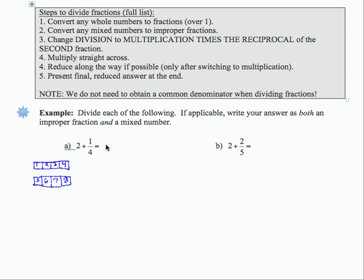So the result of 2 divided by 1 fourth should be 8. Well, let's see how that would work with our mathematical steps. So if I have 2 divided by 1 fourth, 2 is really 2 over 1. Write that as a fraction.